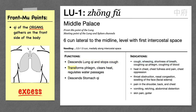Lung 1 also transforms phlegm, which is an excess condition, so it can treat things like coughing up phlegm or chest pain due to phlegm in the chest. It clears heat, treating heat in the chest, or situations where heat is blocking the descending of lung qi.